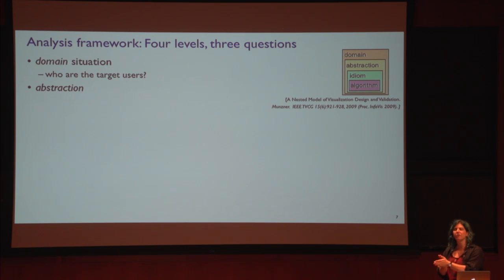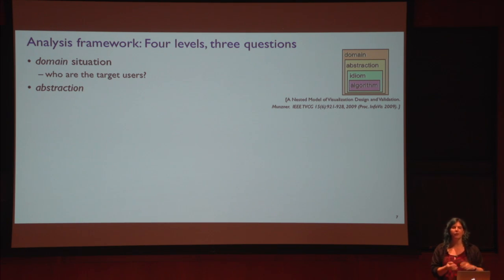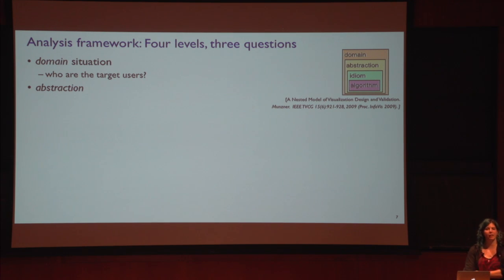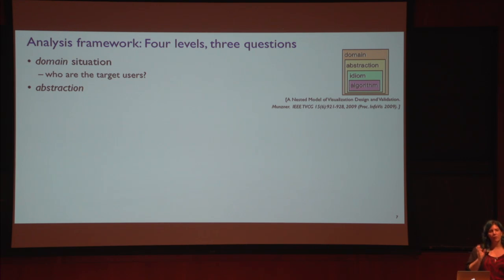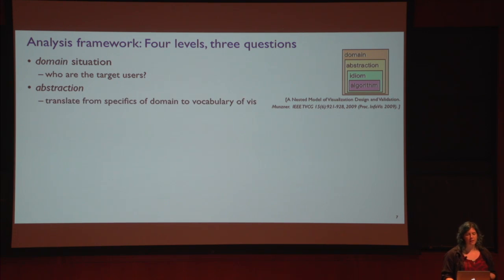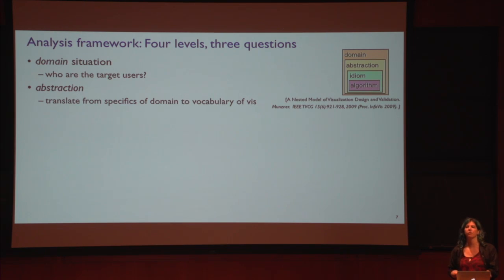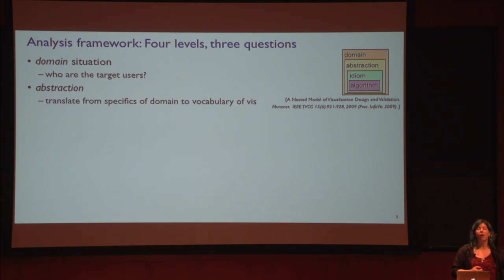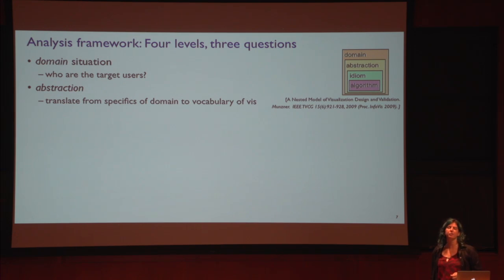A domain encompasses what you as a person bring to the table — what you already know, what your goals are, and the very domain-specific language. When I use the word abstraction, what I specifically mean is trying to translate the specifics of a particular domain into the set of building blocks that we can address with visual representations. An abstracted vocabulary allows you to notice when two problems in magnetohydrodynamics are visually quite different, and when something from physics versus finance are actually the same thing abstracted — meaning we might have similar solutions that work well.